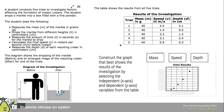On the right side we start seeing the specific things we need to know. There's a table showing the results of the investigation — different trials, mass, speed, and depth. Then we get to the question itself: 'Construct the graph that best shows the results of the investigation by selecting the independent (x-axis) and dependent (y-axis) variables from the table.' You might drag mass, speed, or depth onto the correct axis. Take a moment to look through this problem and try to answer it.